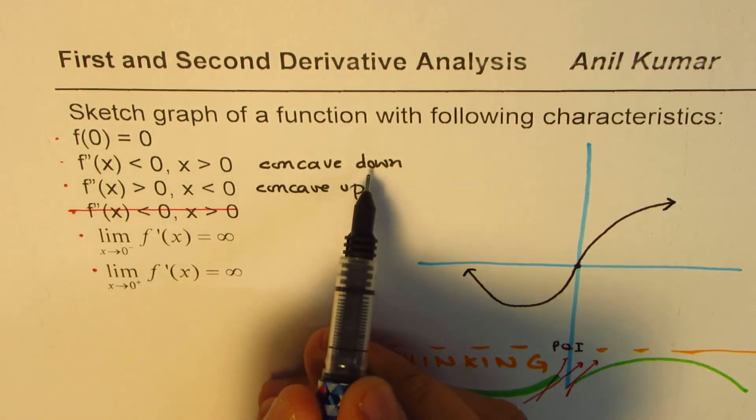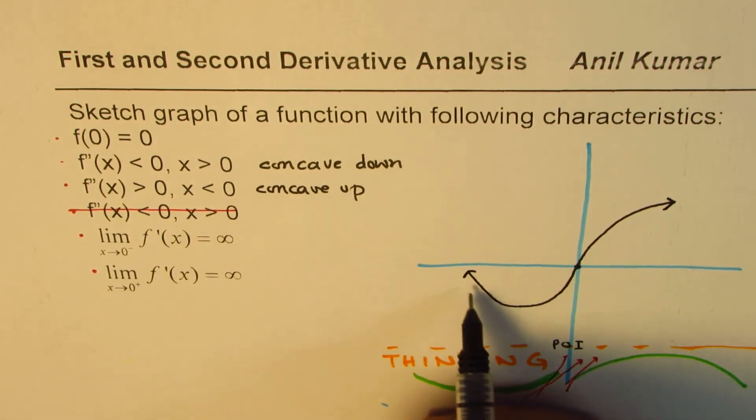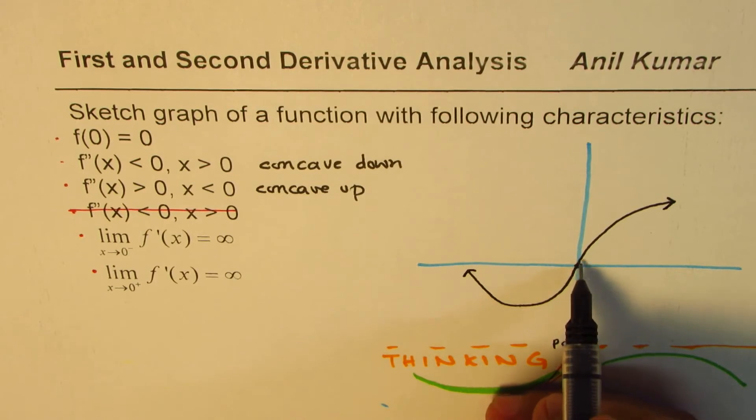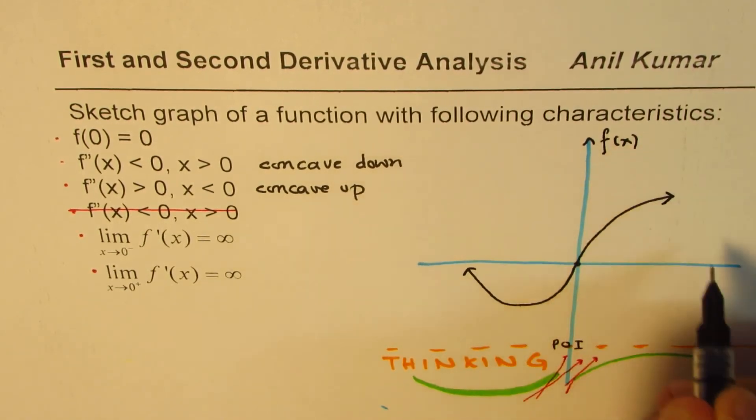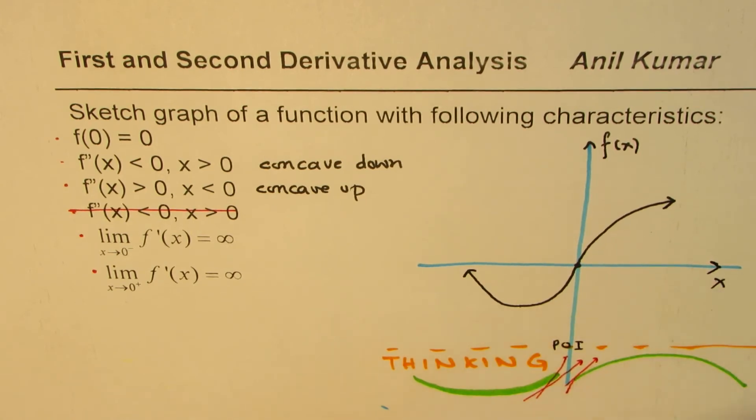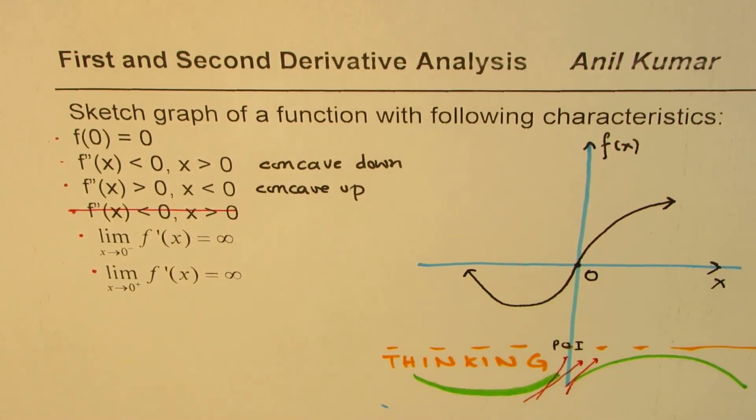f(0) is 0, concave down on the right side, concave up on the left side, and the tangent at this point is positive infinity. So that becomes the graph which matches the given conditions. So I hope you understand the strategy and the thinking process which goes along for sketching such functions.